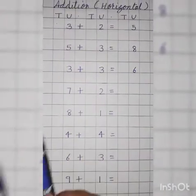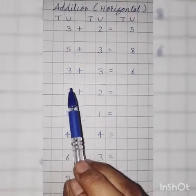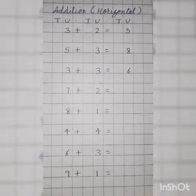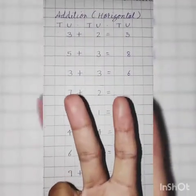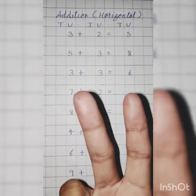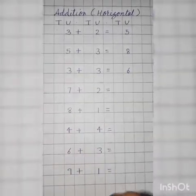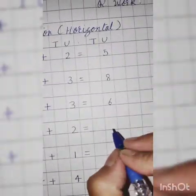7 plus 2. 7 goes on head and 2 on fingers. 2 fingers. Okay, so hit the 7. What comes after 7? 8, 9. Answer is 9. Very good.